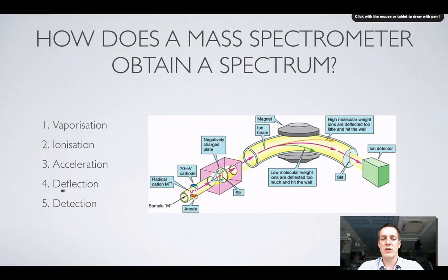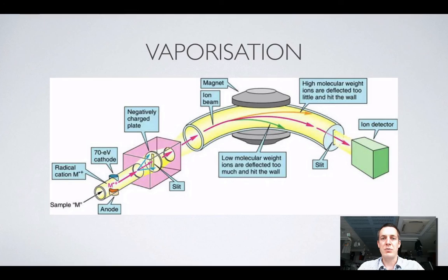There's vaporization, ionization, acceleration, deflection, and detection. And the whole name of the game here is basically to get atoms of this sample, m, to travel through this tube to a detector. So let's look at how these five processes are going to enable us to get the atoms from one end of the machine to the other.